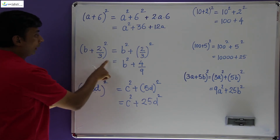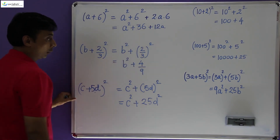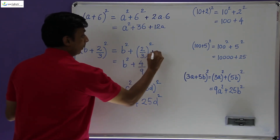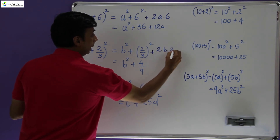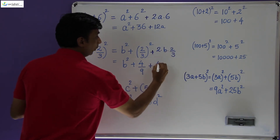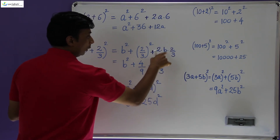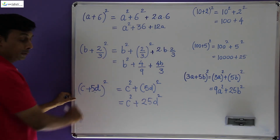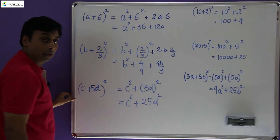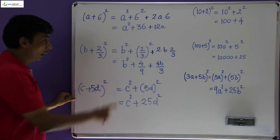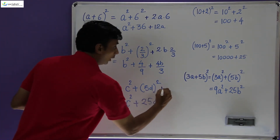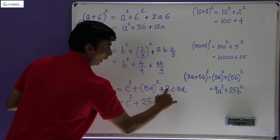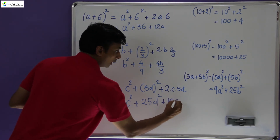Similarly, (b + 2/3)² was written as b² + 4/9. Something is missing — the 2ab term. Therefore we get + 4b/3, because 2 × (2/3) = 4/3, giving 4b/3. That completes the answer. For (c + 5d)², it was written as c² + 25d². The missing 2ab term is 2 × c × 5d: 2 × 5 = 10, so the answer is + 10cd.